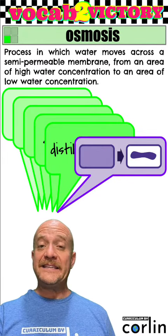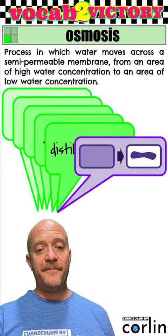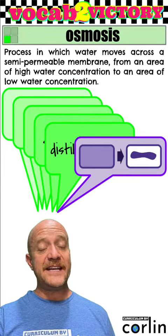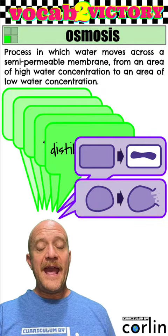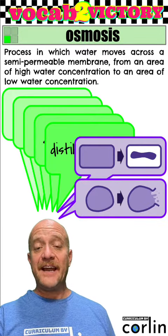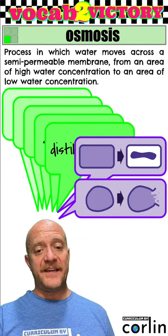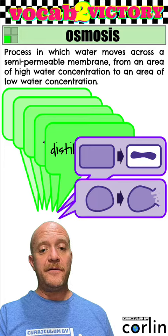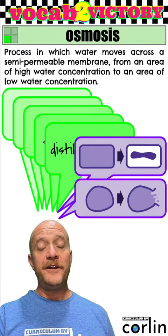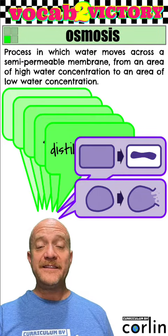An example is this diagram. This represents an onion cell in salt water. And this diagram represents an animal cell in distilled water. The top one is shriveling, the bottom one is bursting.